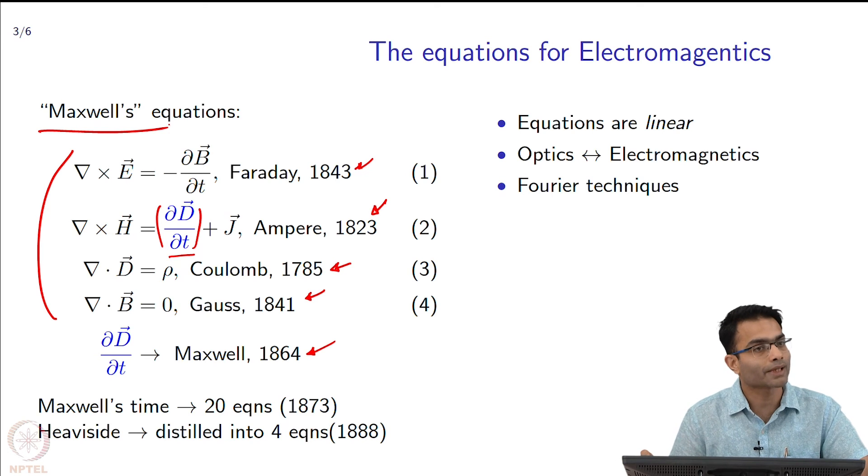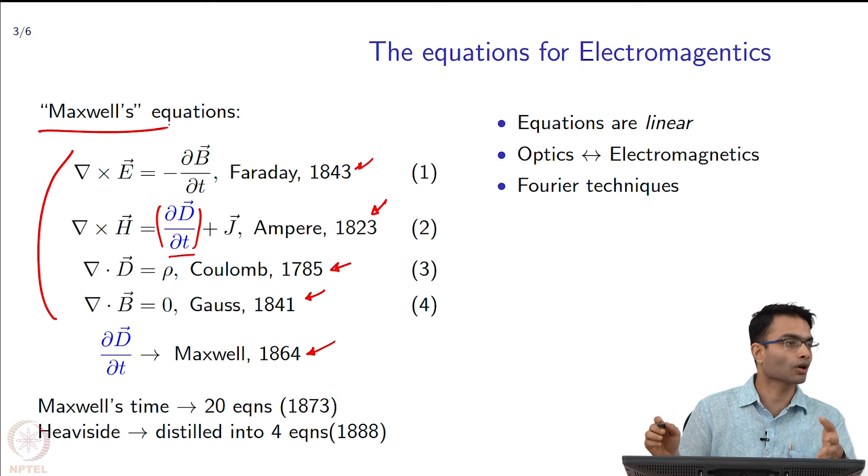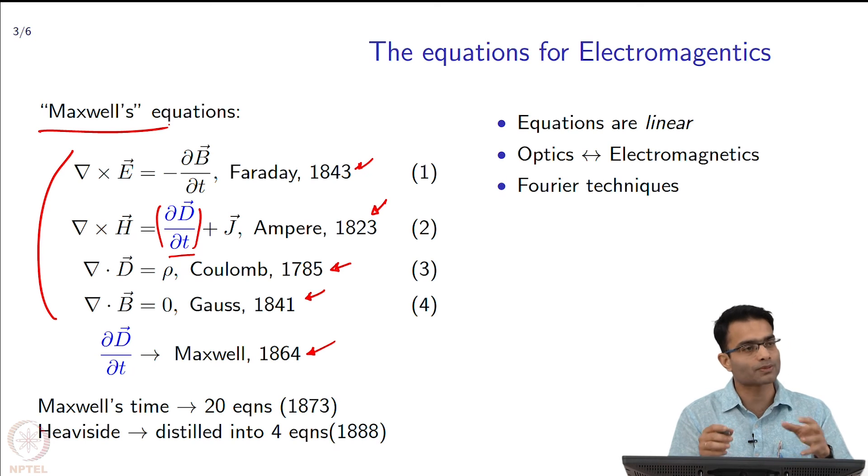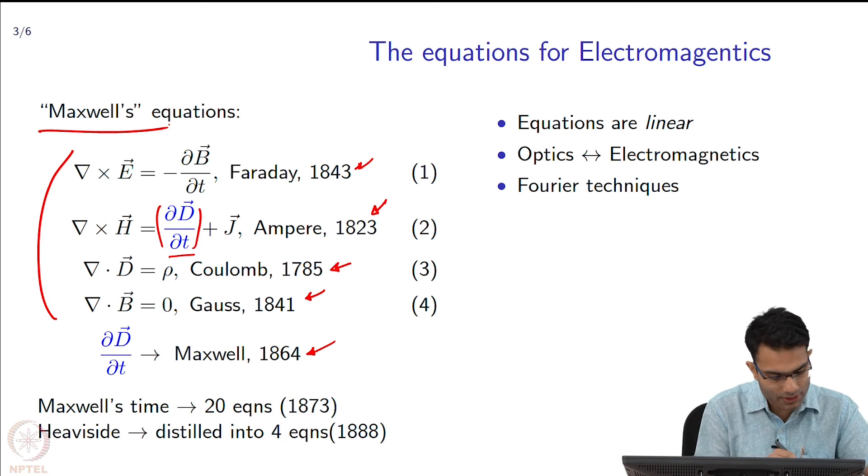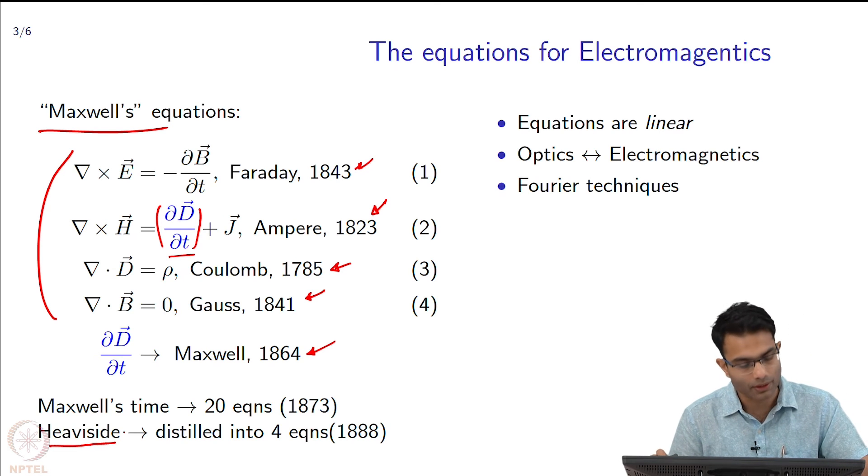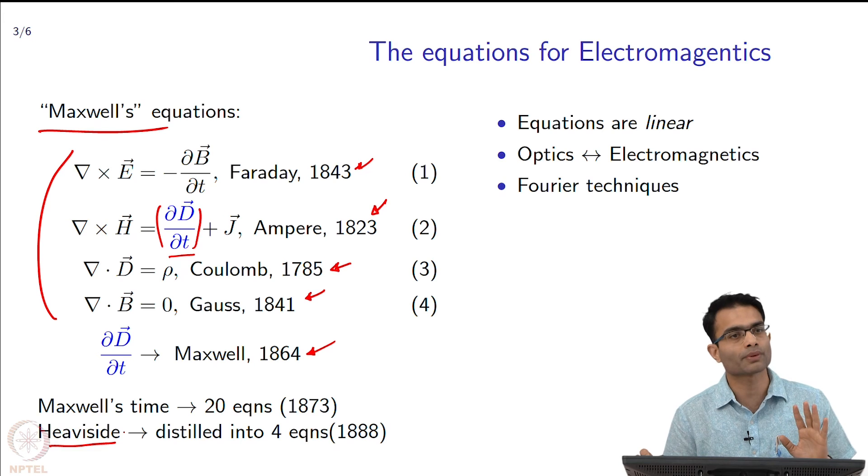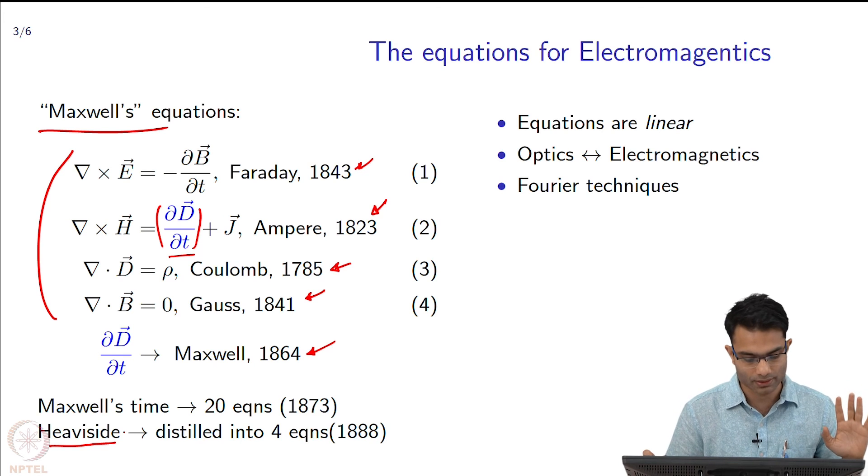Even though none of these 4 equations has his name, it is because of his singular contribution of that displacement current term that all of these equations in today's day are called Maxwell's equations. Again, at the time of Maxwell these were 20 separate equations - this is not how Maxwell wrote them. Maxwell wrote them in some slightly elaborate form.